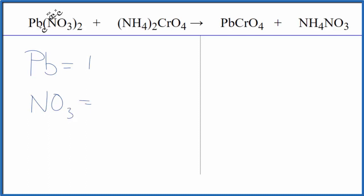NO3, I have one of these times two so I have two of those. Ammonium ion, this is a good one to remember. I have the NH4, that's the ammonium ion, and I have two of those.